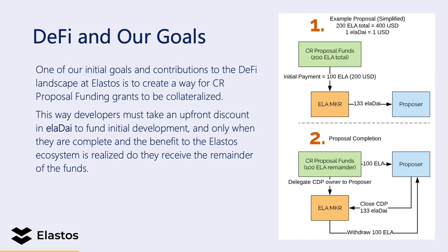As for DeFi, one of our initial goals at the Ethereum Task Force is to build a small concept that will allow CR proposal funds to be collateralized and ELA DAI to be withdrawn. ELA DAI is a stablecoin, so it's perfectly fine for proposers and developers to spend that ELA DAI upfront — only when the project is complete and the benefit to the Elastos ecosystem is realized do they receive the remainder of the funds. This is a great open-source project that will demonstrate basic DeFi functionality, requiring things like oracles and money markets which we'll all have to develop.